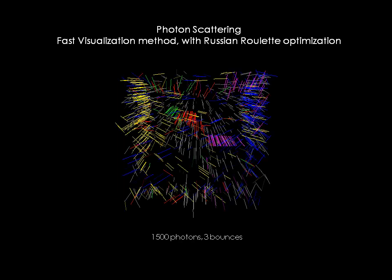The next step is photon scattering. Photons are emitted from a single point light source in uniform random directions. Using the fast visualization method, the outgoing instead of incoming power is stored at the surface. This allows for both direct and indirect illumination to be computed from the photon map. In addition, Russian Roulette optimization is used, scaling the number of reflected photons.